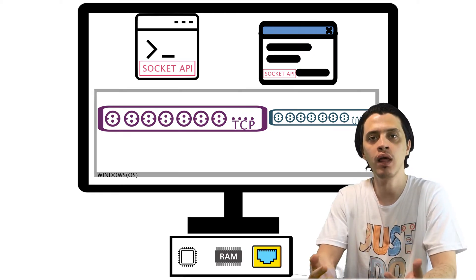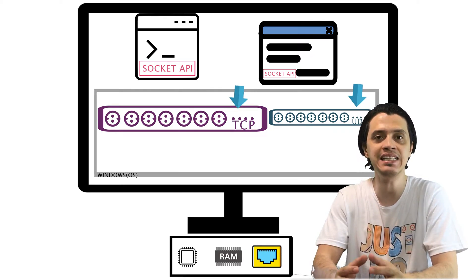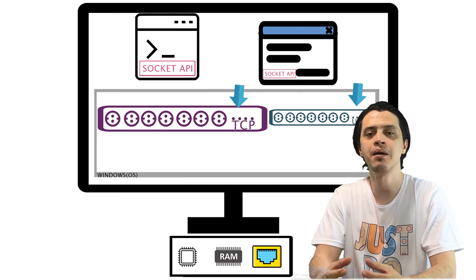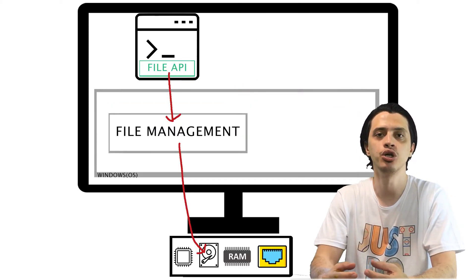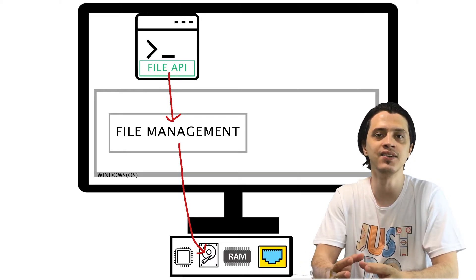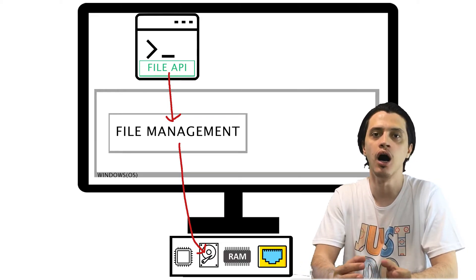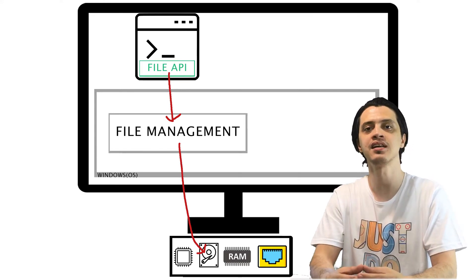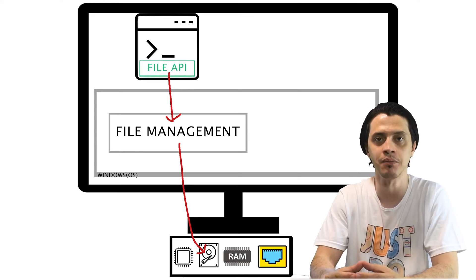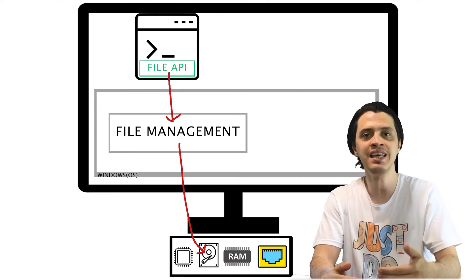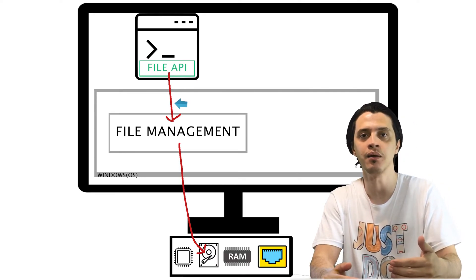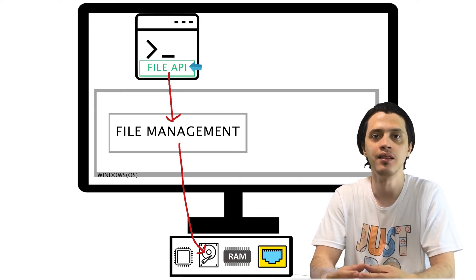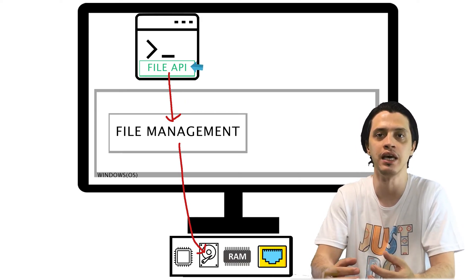As we said before, all operating systems implement the TCP and UDP protocols inside their kernels. For example, one process could use the windowing and graphics capabilities, or IPC, or file management capabilities, implemented inside the kernel of the operating system by actually binding itself at runtime to those implementations inside the kernel and by calling the C-header files, the APIs.